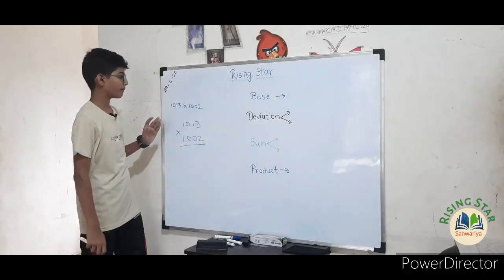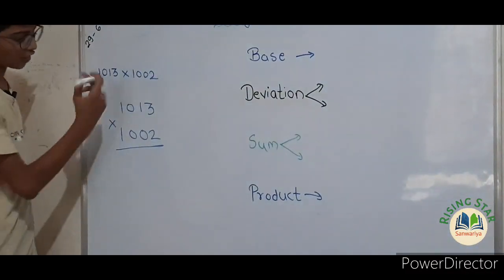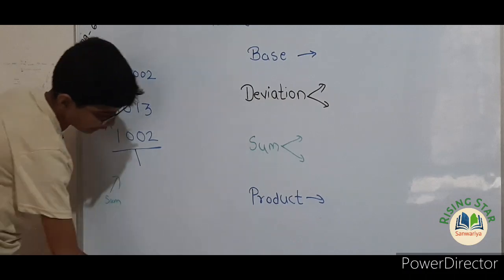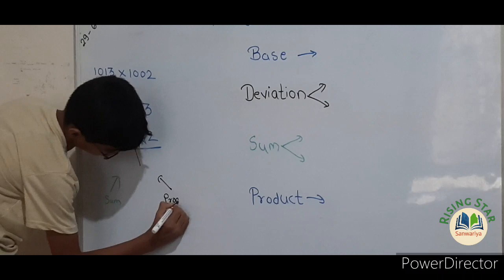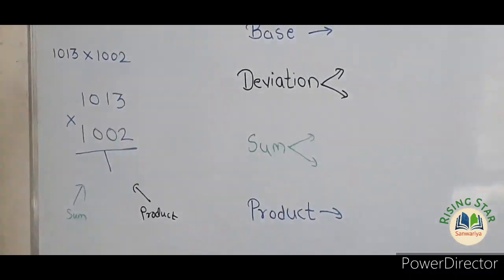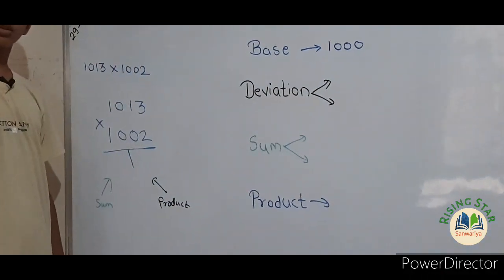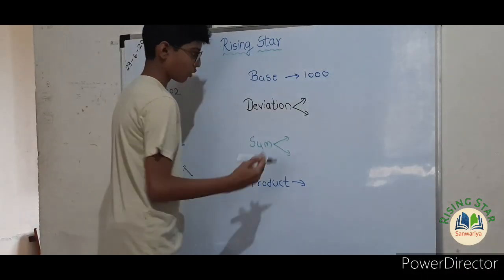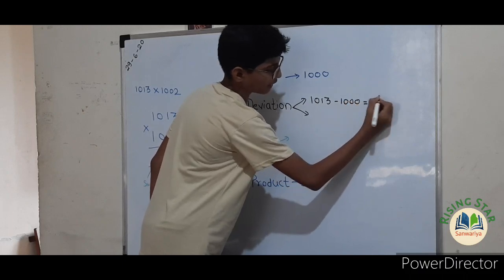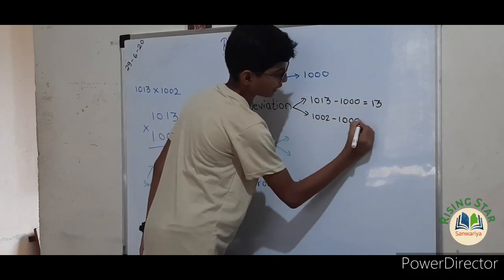Let's begin with the next example. Here we have one thousand and thirteen into one thousand and two. Just follow the five steps. One thousand and thirteen and one thousand and two are near to thousand, so thousand will become the base. Now let's find the deviation by subtracting the base from each number. One thousand and thirteen minus thousand equals thirteen, and one thousand and two minus thousand equals two.